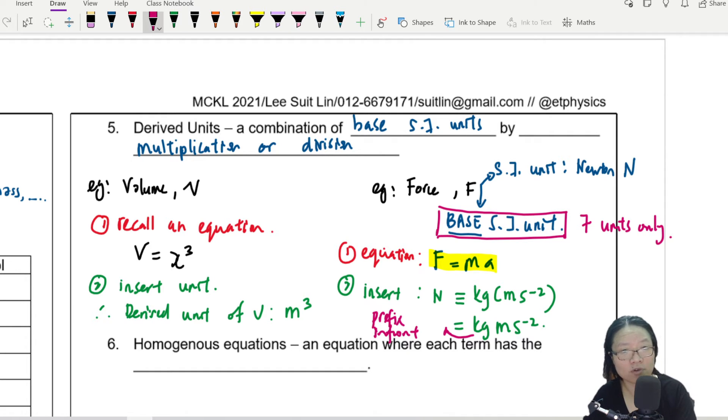So in those cases, there are two possibilities. Number one, maybe your syllabus haven't covered yet. Number two, maybe the question will give you information. But once again, just to differentiate the ideas, base SI unit must consist of the seven quantities only. Anything that is not in the seven is not a base SI unit.